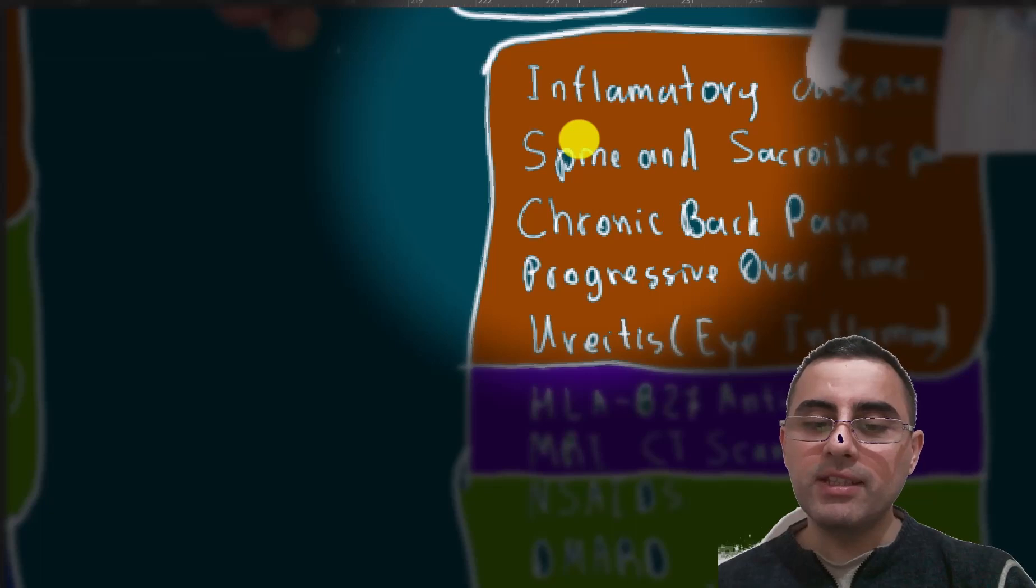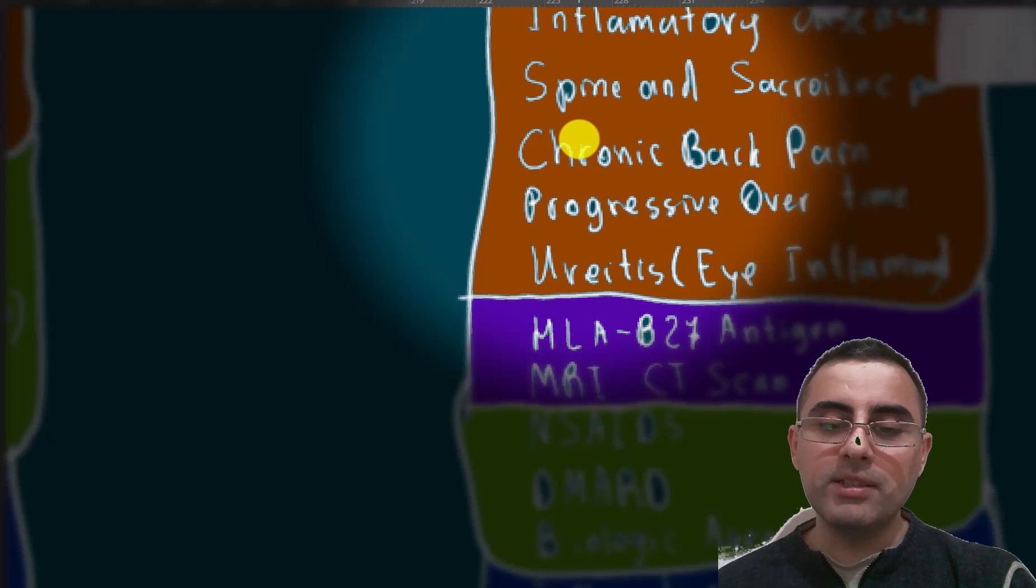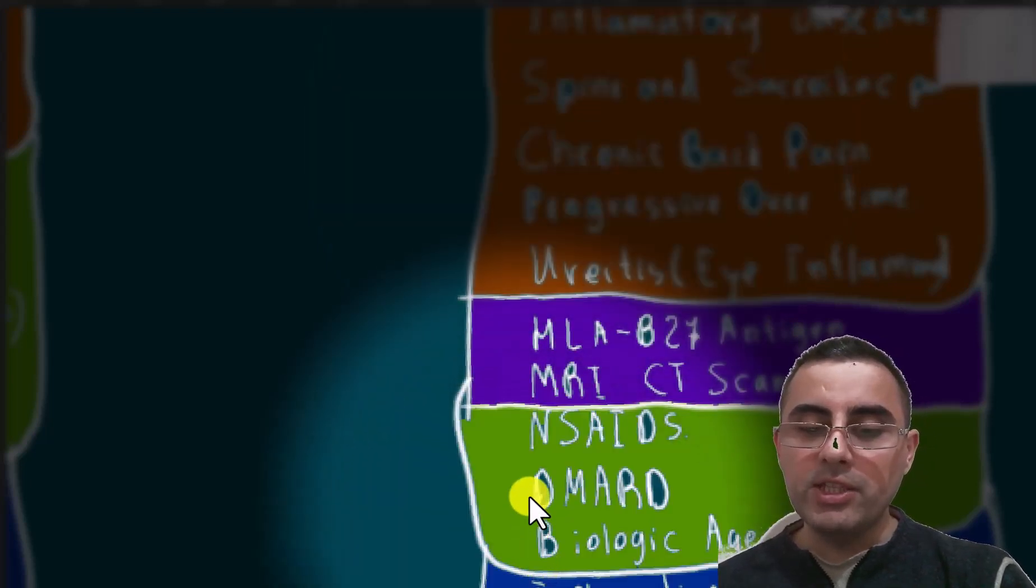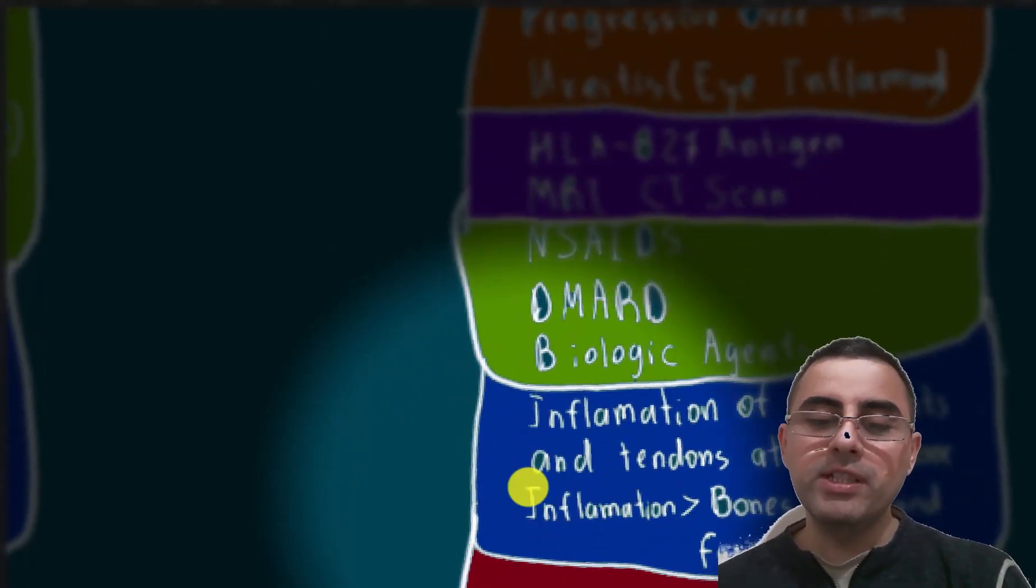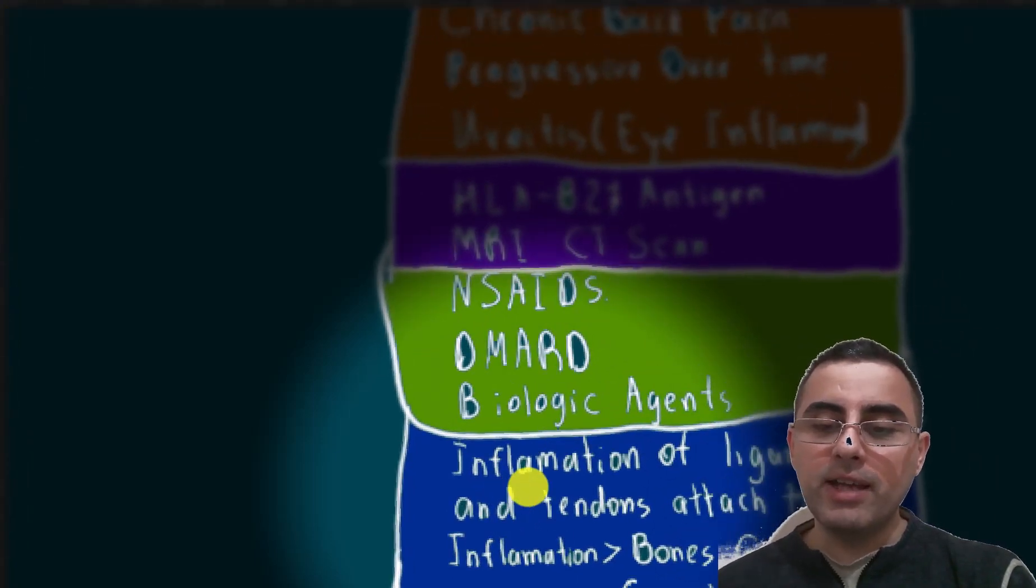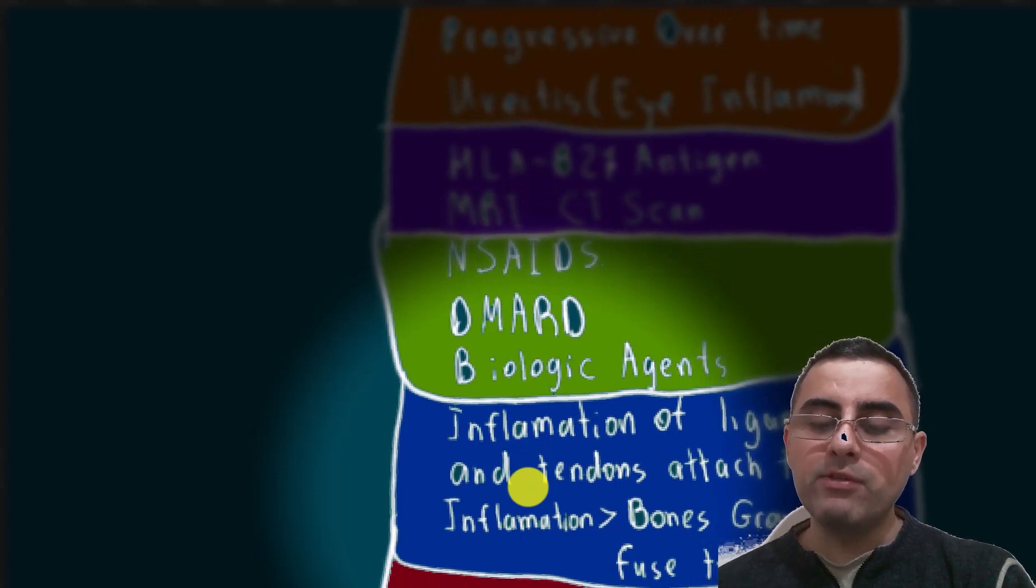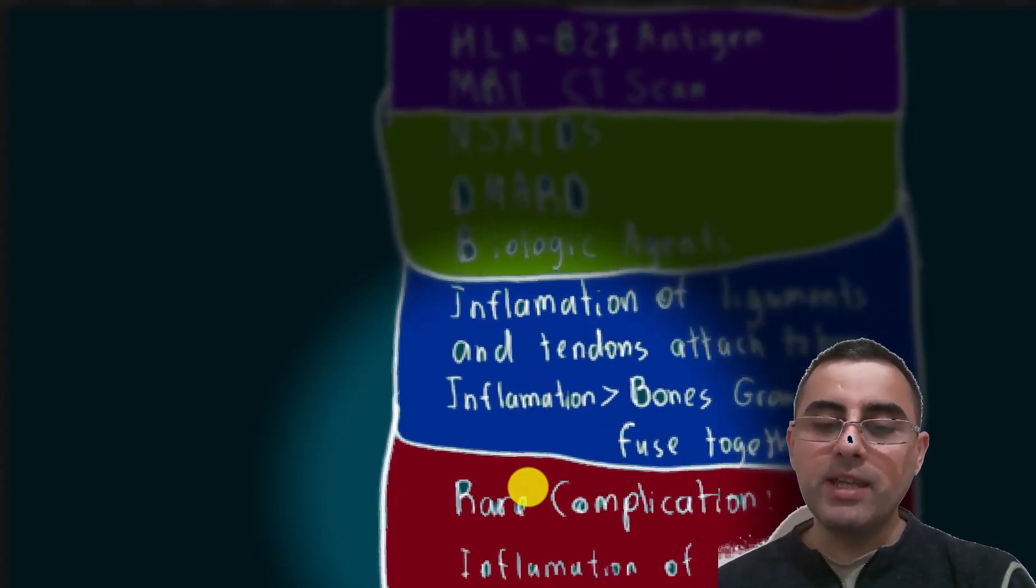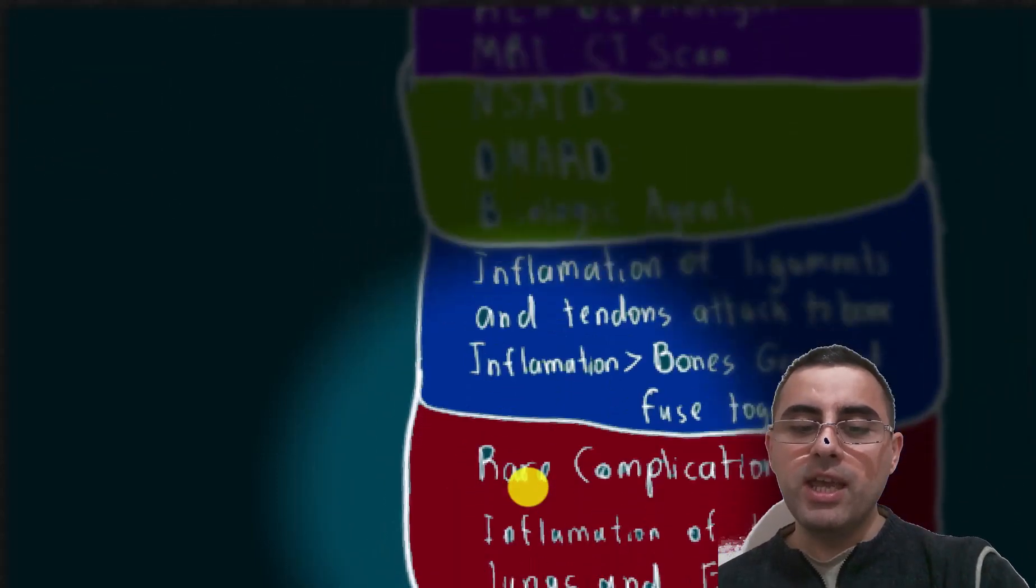For diagnosis, MRI and CT scan is used. Treatment is non-steroidal anti-inflammatory drugs, also DMARDs and biologic agents. The mechanism is inflammation of ligaments and tendons, especially where they are attached to bones. Inflammation happens and causes bone to grow and fuse together.